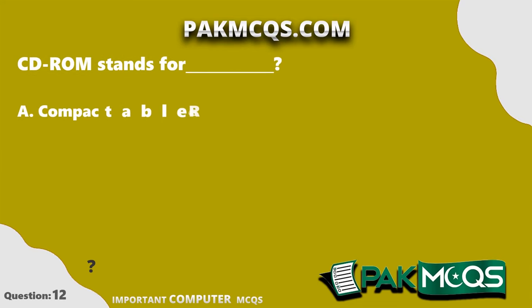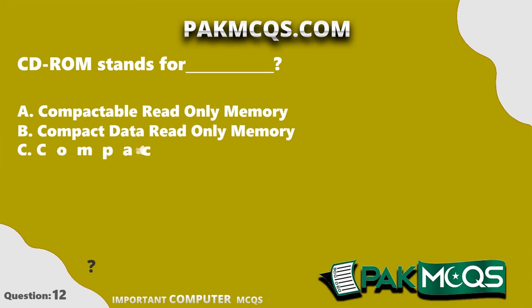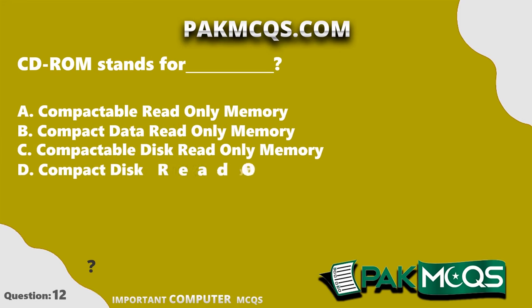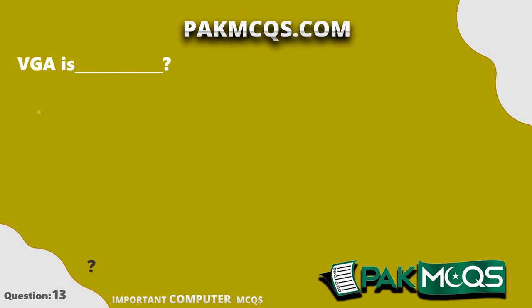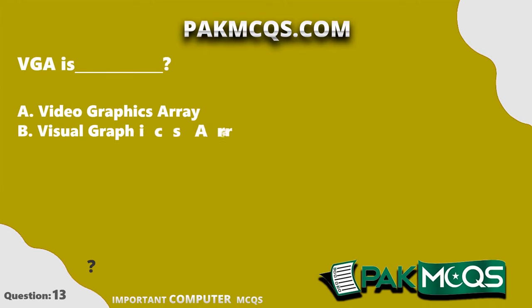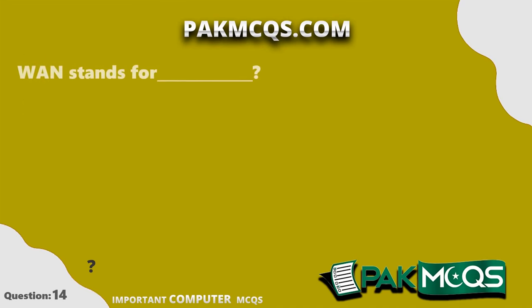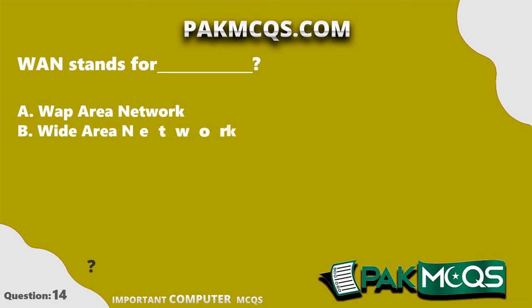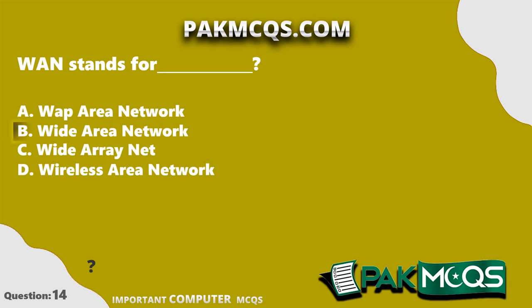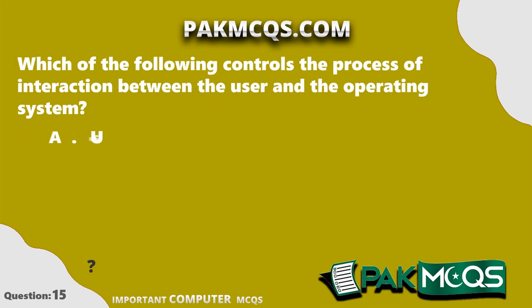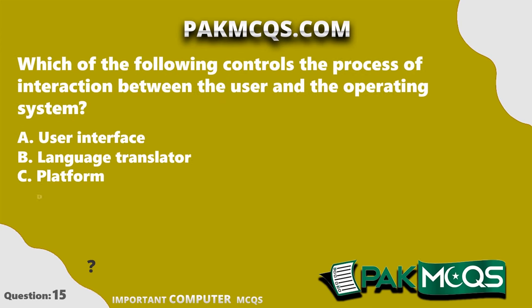CD-ROM stands for Compact Disk Read Only Memory. VGA stands for Video Graphics Array. WAN stands for Wide Area Network. Which of the following controls the process of interaction between the user and the operating system? The answer is user interface.